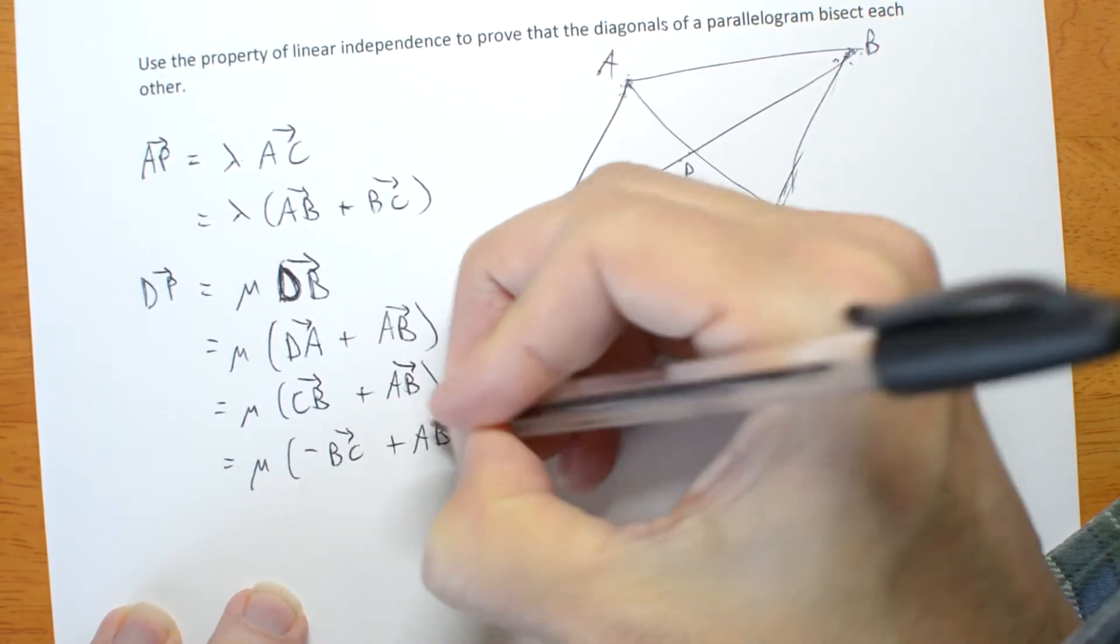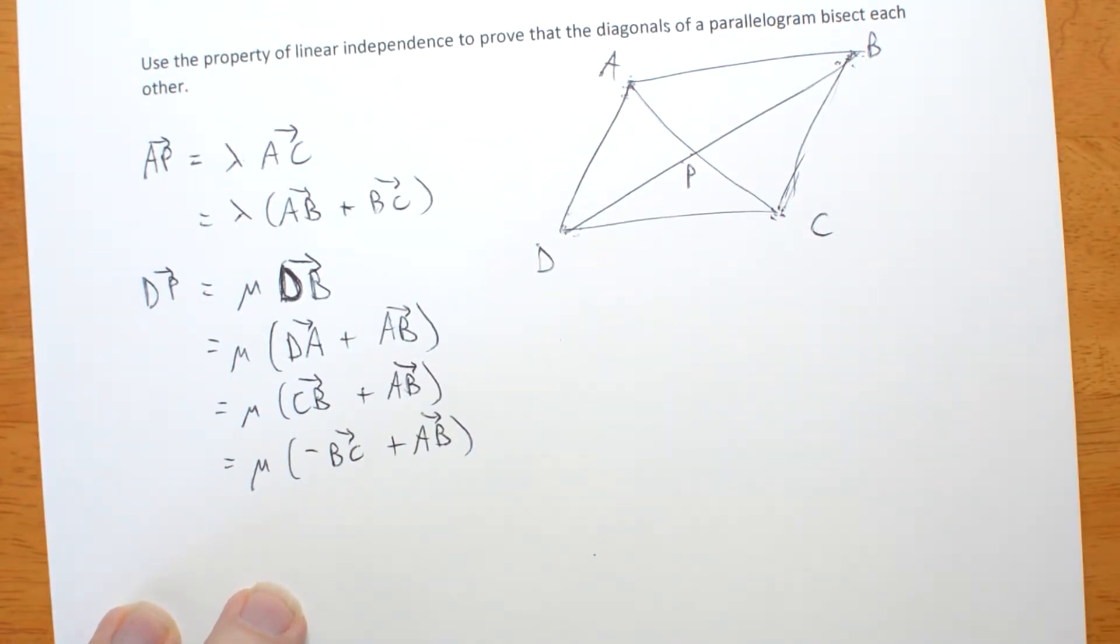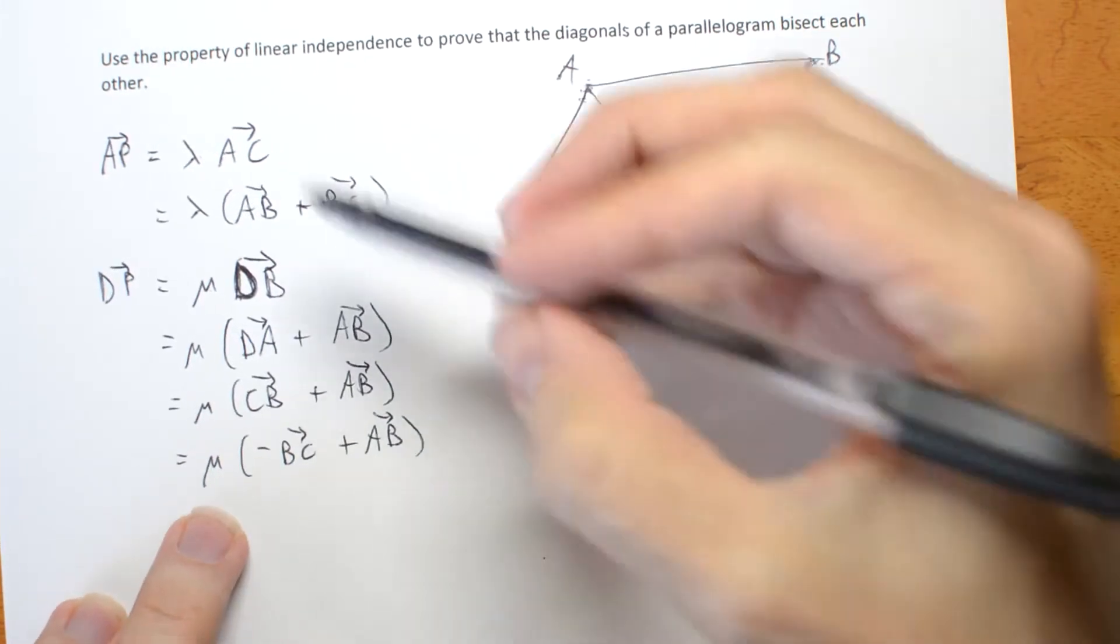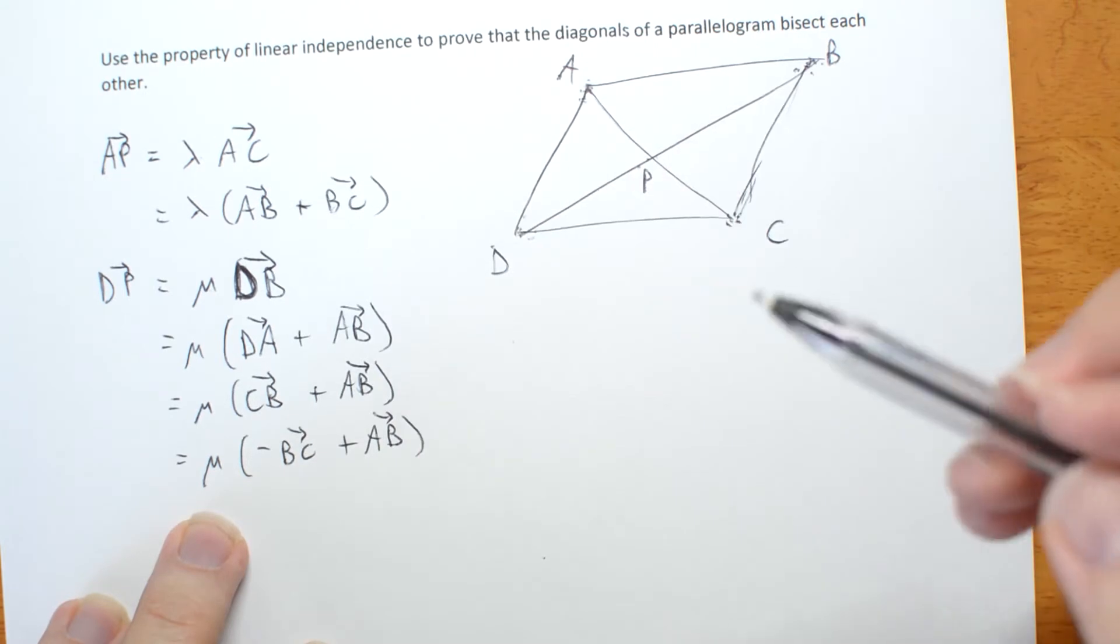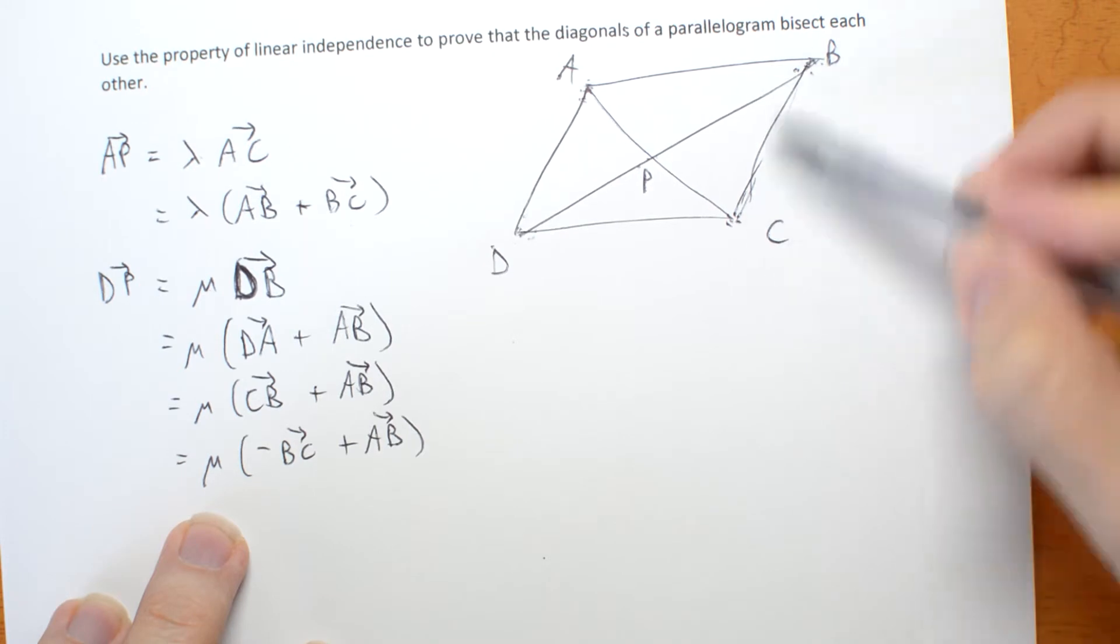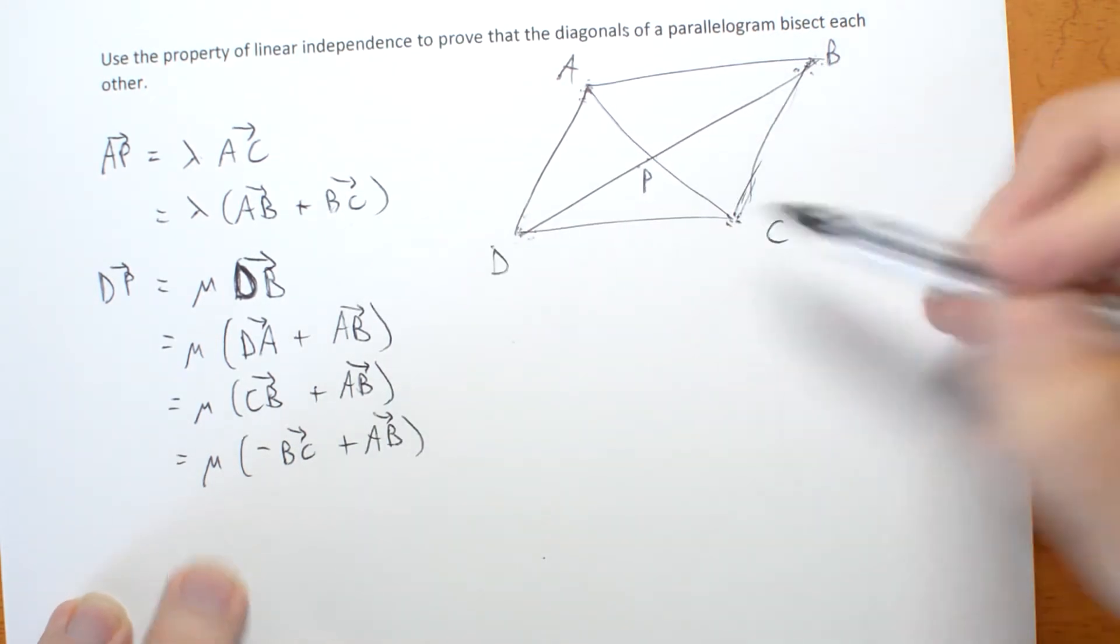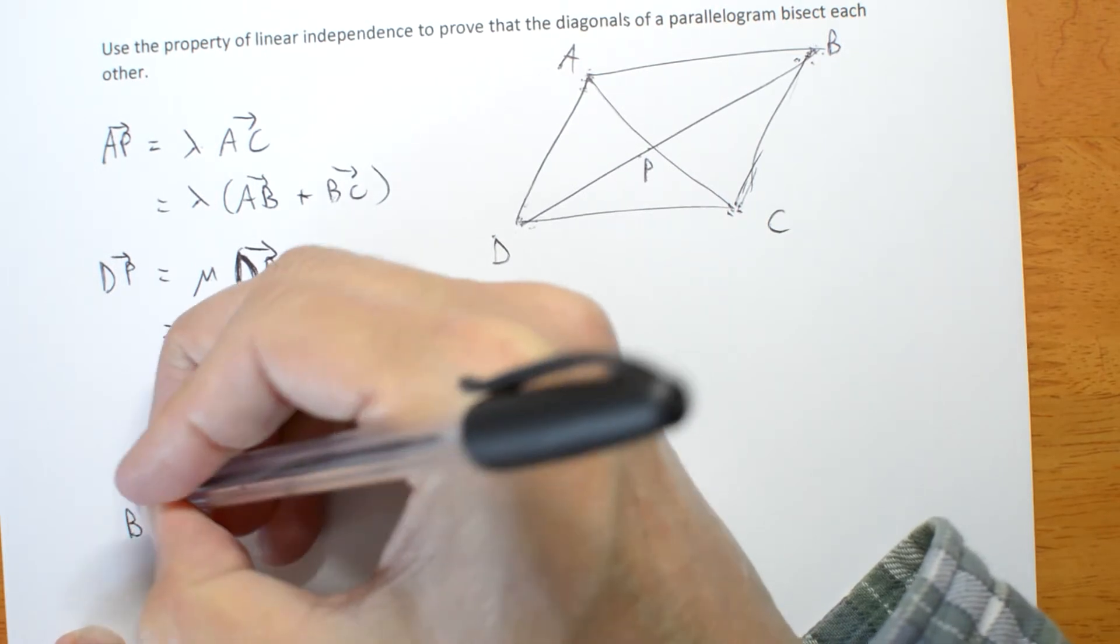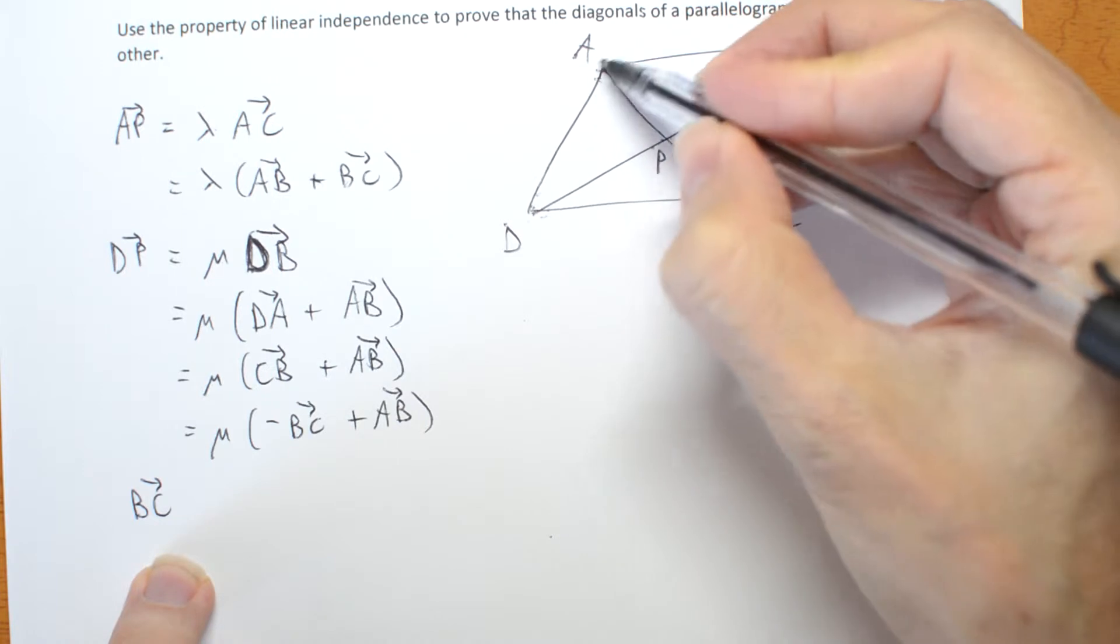DA plus AB. Now I'm going to use a clever little trick. I want to put these two equations together. And I'm going to do it by thinking about one particular vector, BC, that's in common between these two. Let's think about BC.